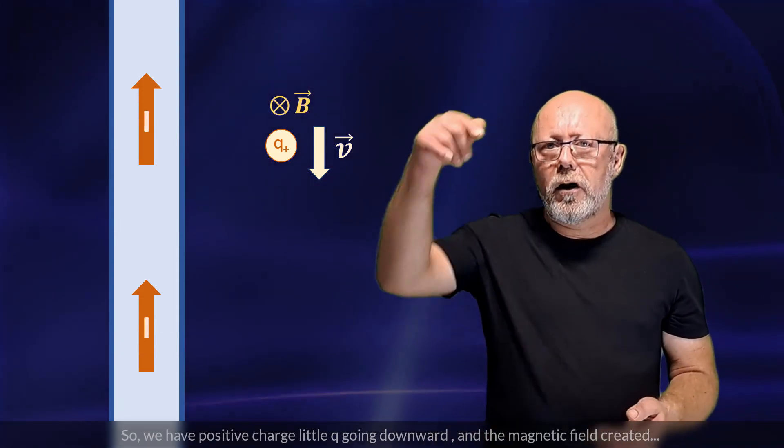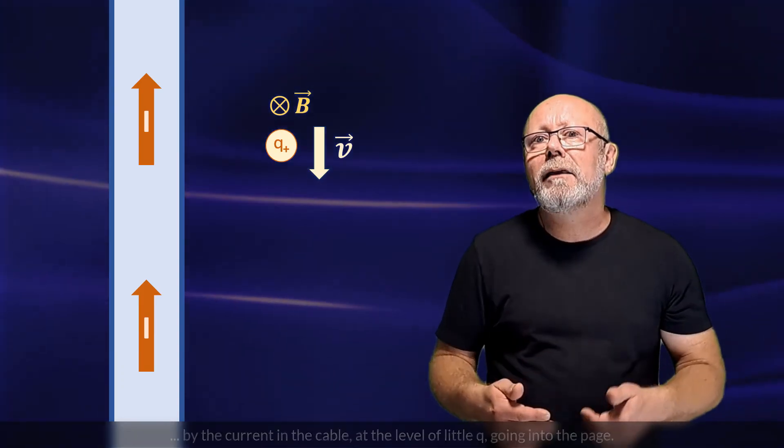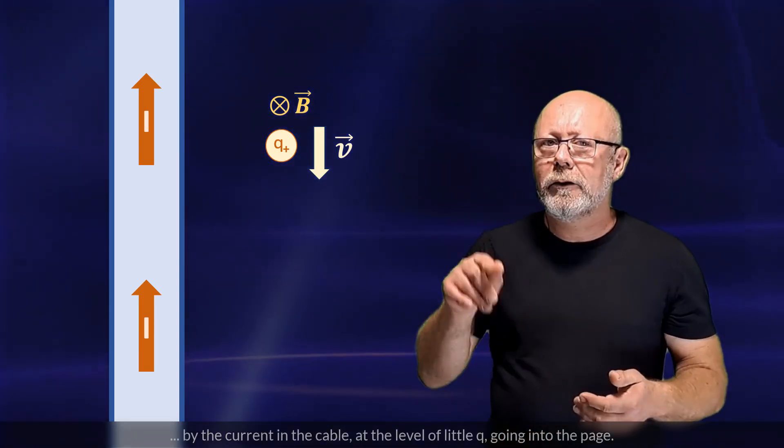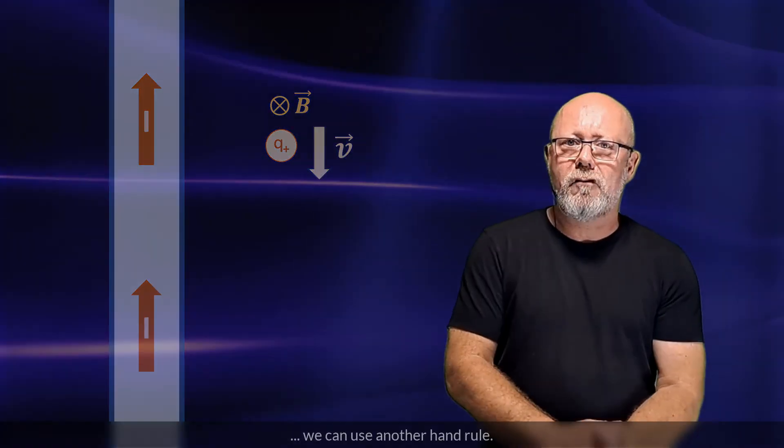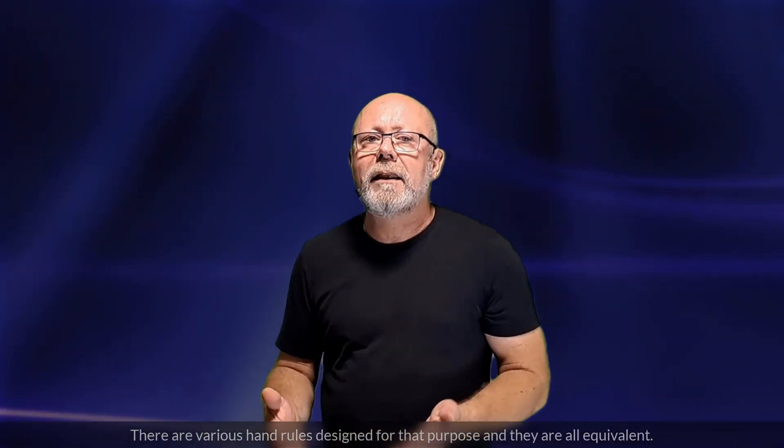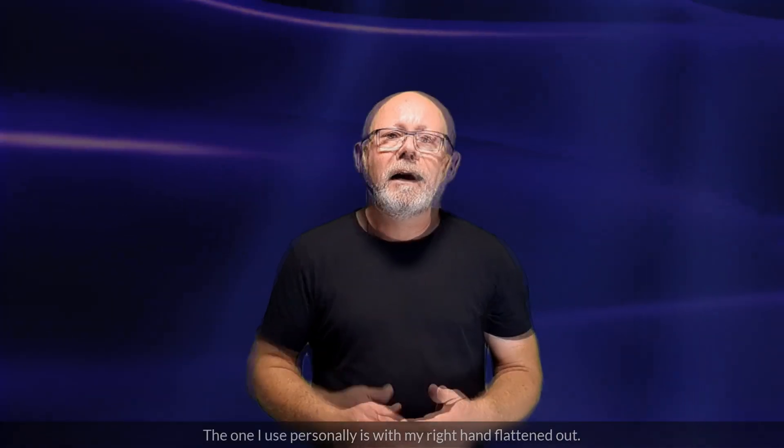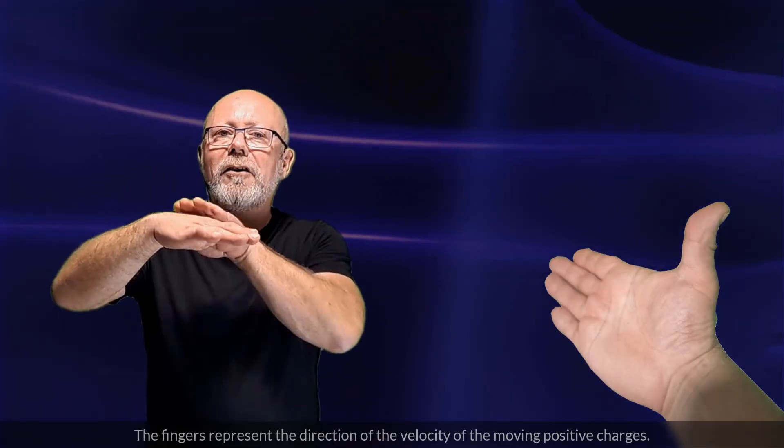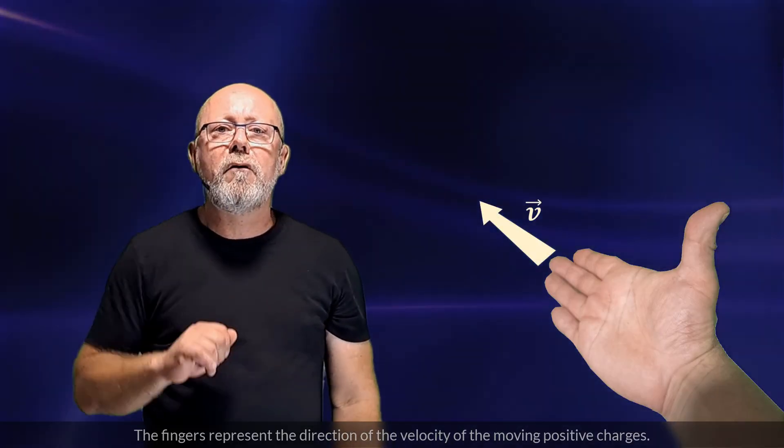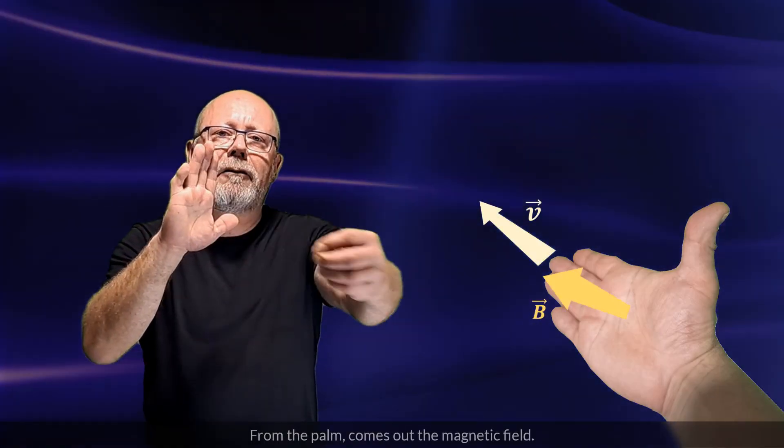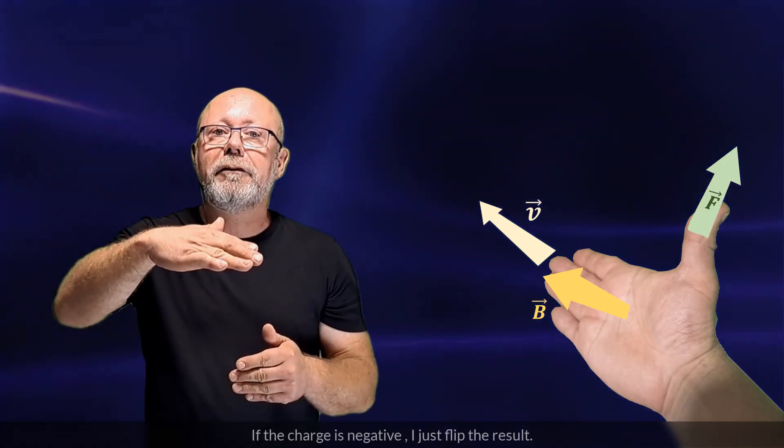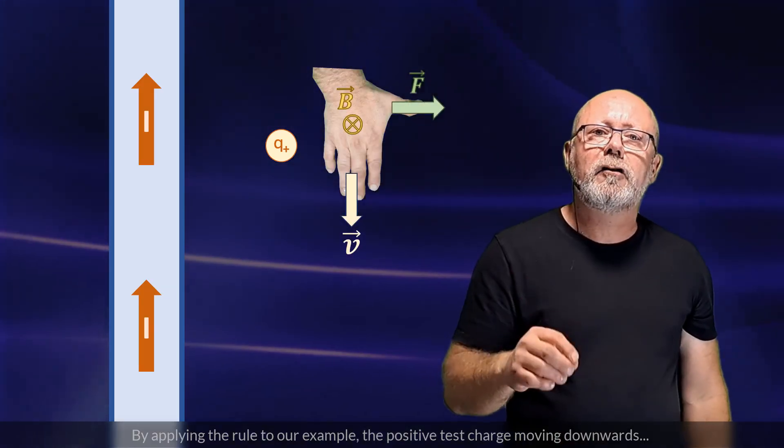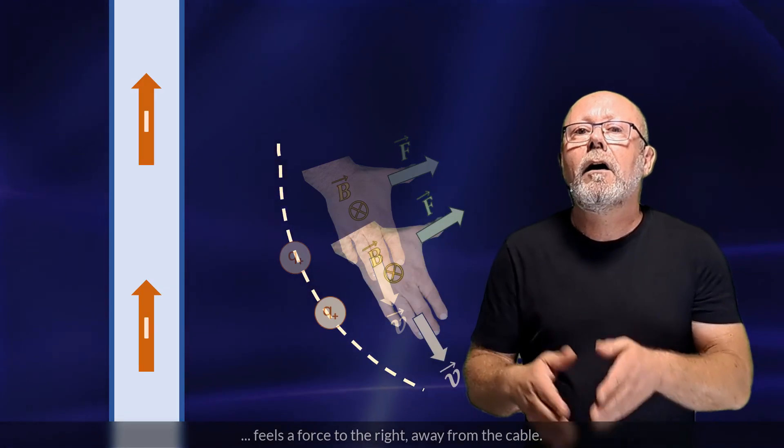So, we have positive charge little q going downwards, and the magnetic field created by the current in the cable at the level of little q going into the page. Now, to find out what is the effect of that magnetic field on charge little q, we can use another hand rule. There are various hand rules designed for that purpose, and they are all equivalent. The one I use personally is with my right hand flattened out. The fingers represent the direction of the velocity of the moving charge. From the palm comes out the magnetic field. The thumb gives the direction of the magnetic force experienced by the moving charge. If the charge is negative, I just flip the result.